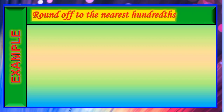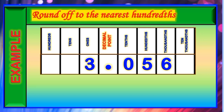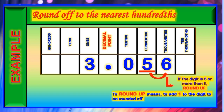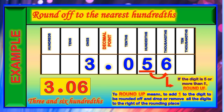Let us have another example of a decimal rounded off to the nearest hundredths. The digit in the rounding place is the digit 5, and the digit to its right is the digit 6. Since 6 is more than 5, we are going to round up — we add 1 to the digit 5, so it becomes 6, and we remove the digit 6 to its right. Therefore, the final answer is 3 and 6 hundredths.